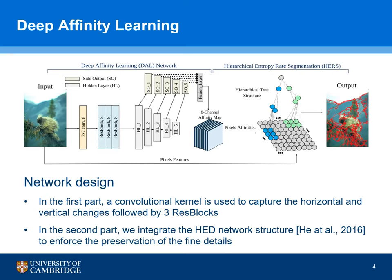Our proposed technique follows the graph-based philosophy and consists of two stages. In the first stage, we propose a deep affinity learning network to learn the pairwise pixel relationship among all the pixels. In the network, we first use a convolutional kernel to capture the horizontal and vertical changes, which is followed by three residual blocks to accelerate the training process.